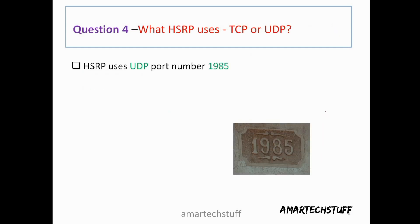Question four: Does HSRP use TCP or UDP? The answer is UDP. This is a tricky question — always remember HSRP uses UDP and not TCP. HSRP uses UDP port number 1985.